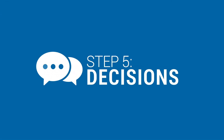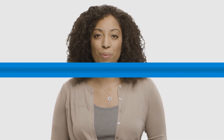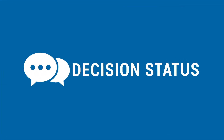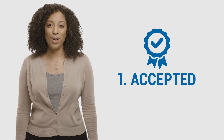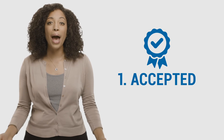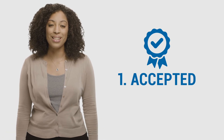Step five: decisions. Once we have evaluated all of the necessary information, we'll let you know our final decision regarding your child's admissions to Thales Academy. The three primary types of decision status that are issued after an interview are: you're in — we think your child will thrive in our academic environment, and we're happy to be able to offer you a seat.